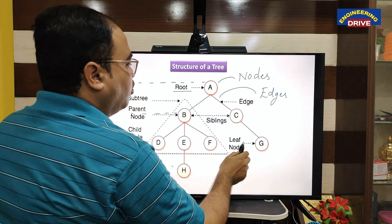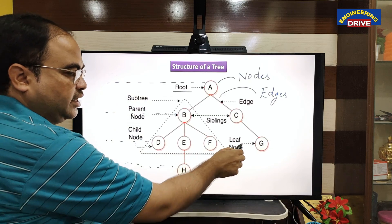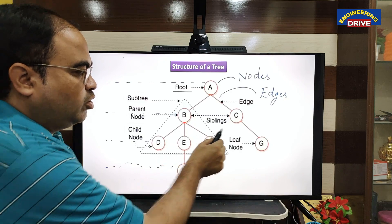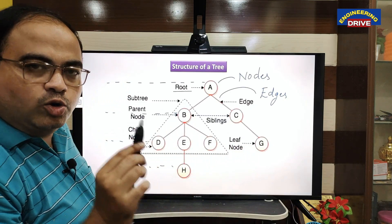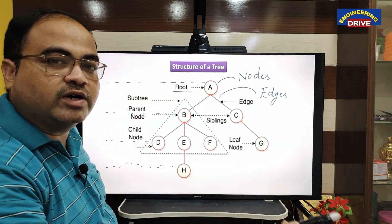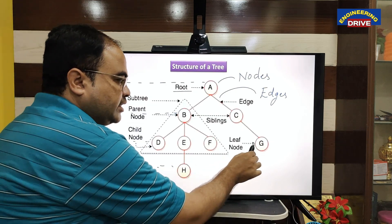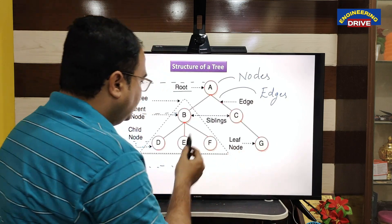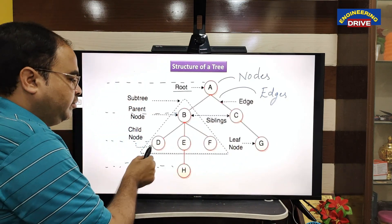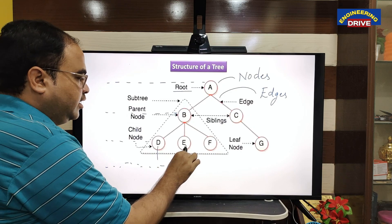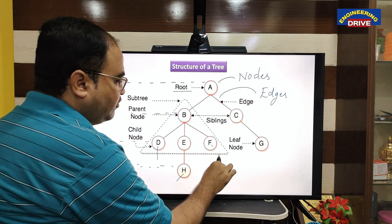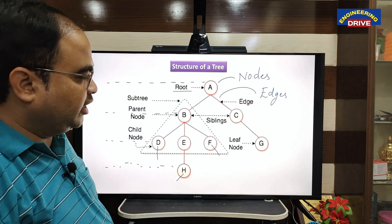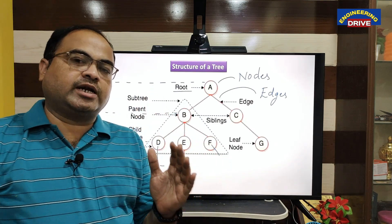What is a leaf node? A leaf node is a node which does not have any further child nodes. Here, G is not having any child nodes, so G is a leaf node. Not only G — D, H, and F are also leaf nodes in this tree because they are not having any child nodes.